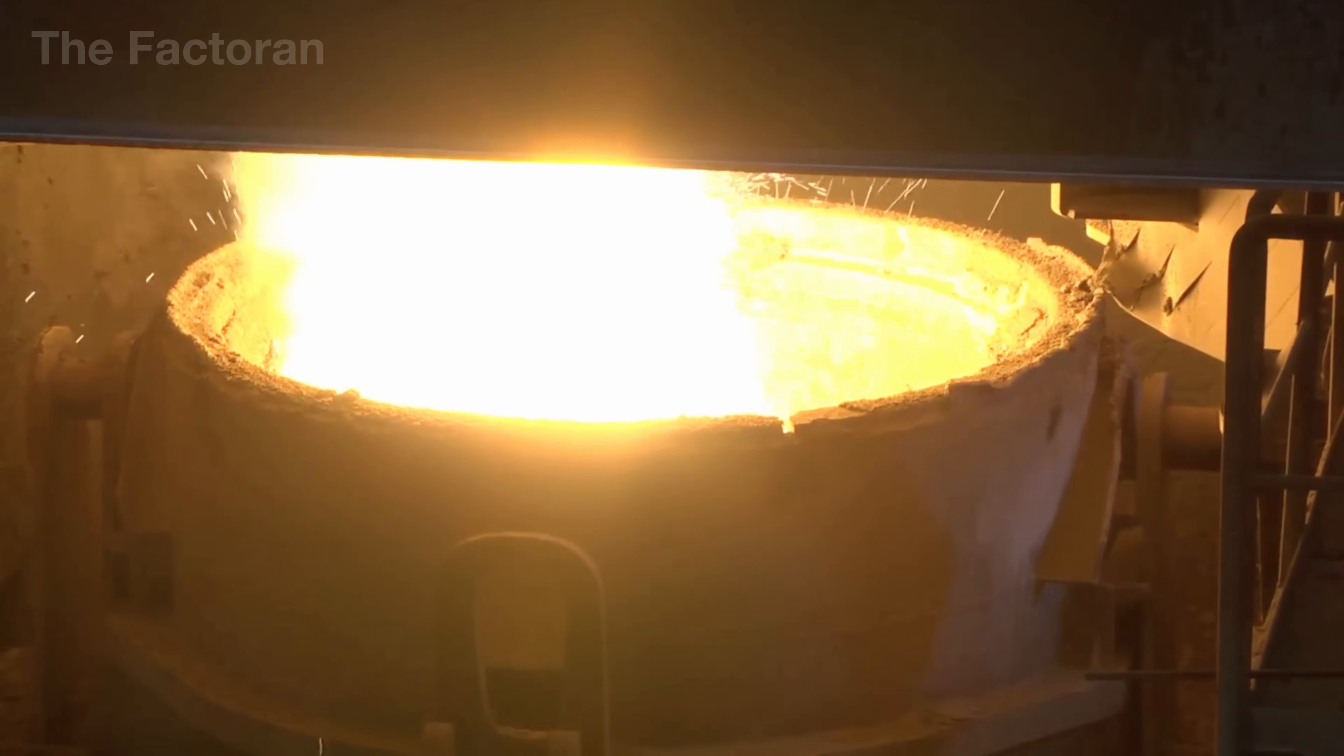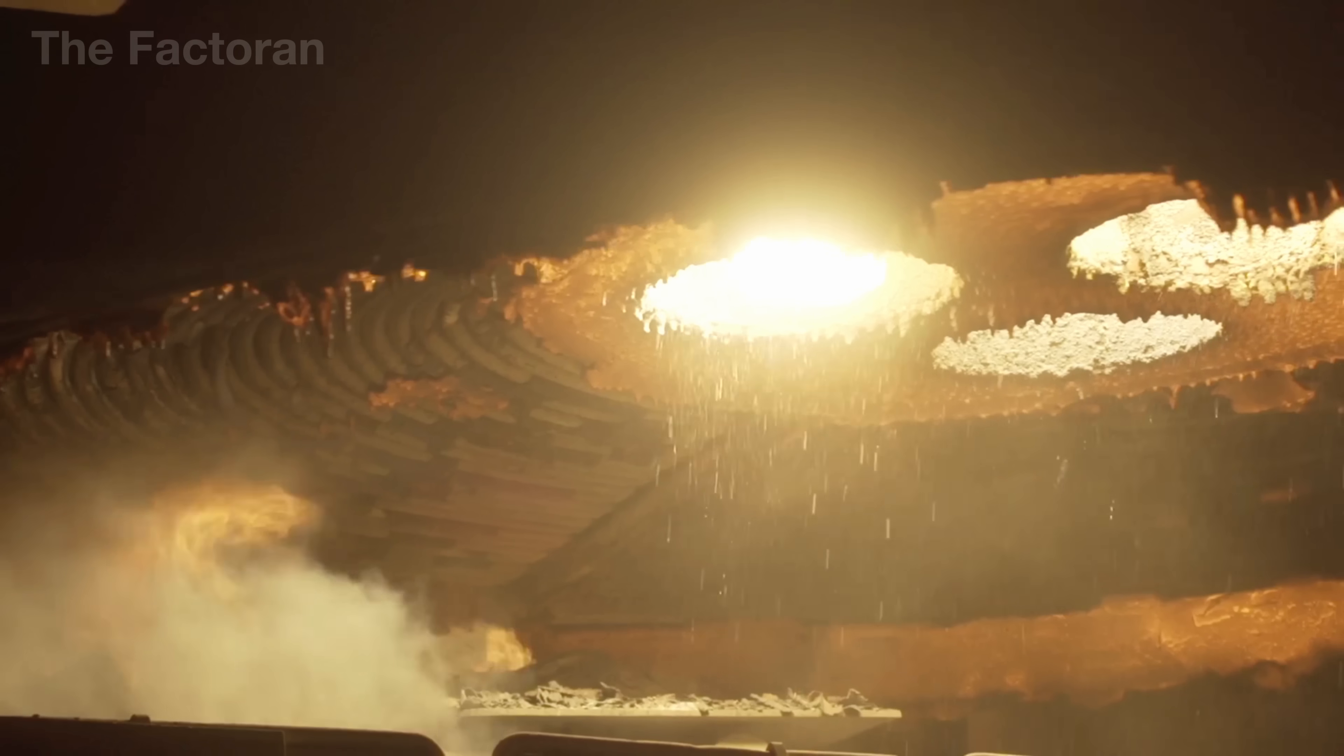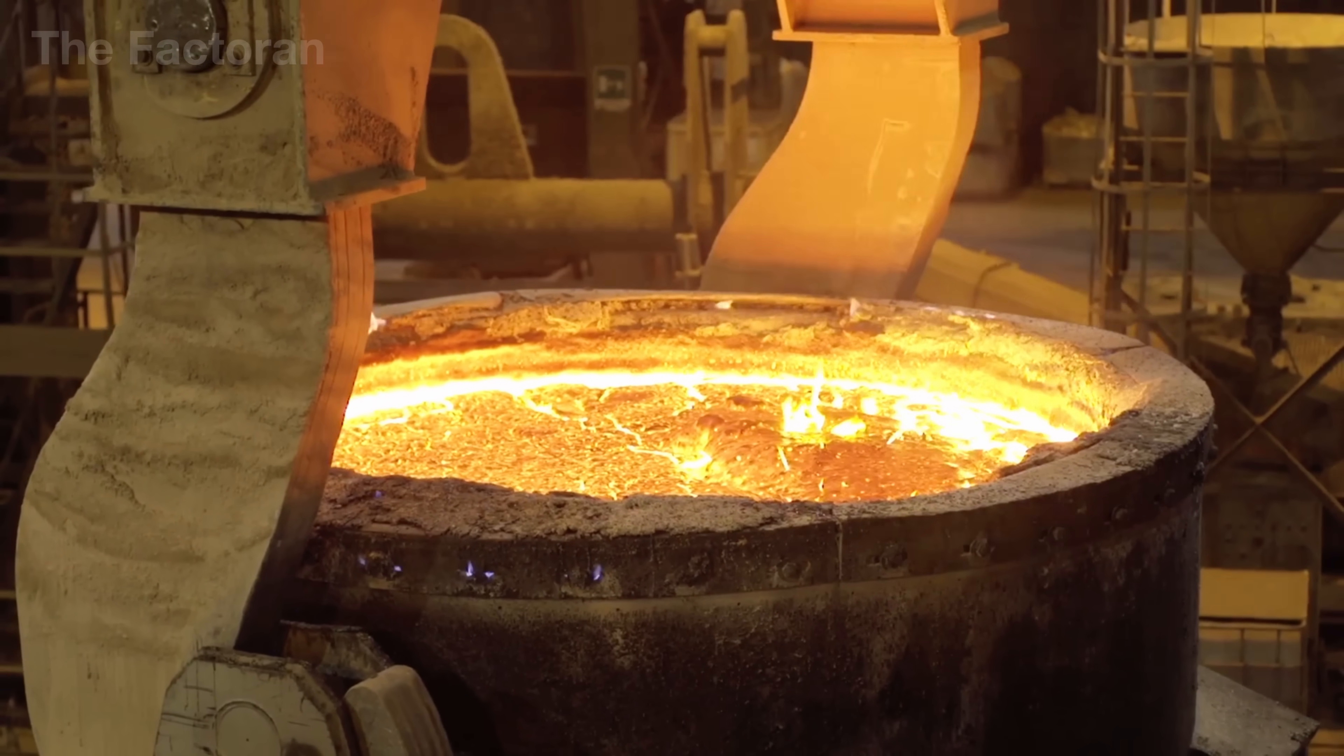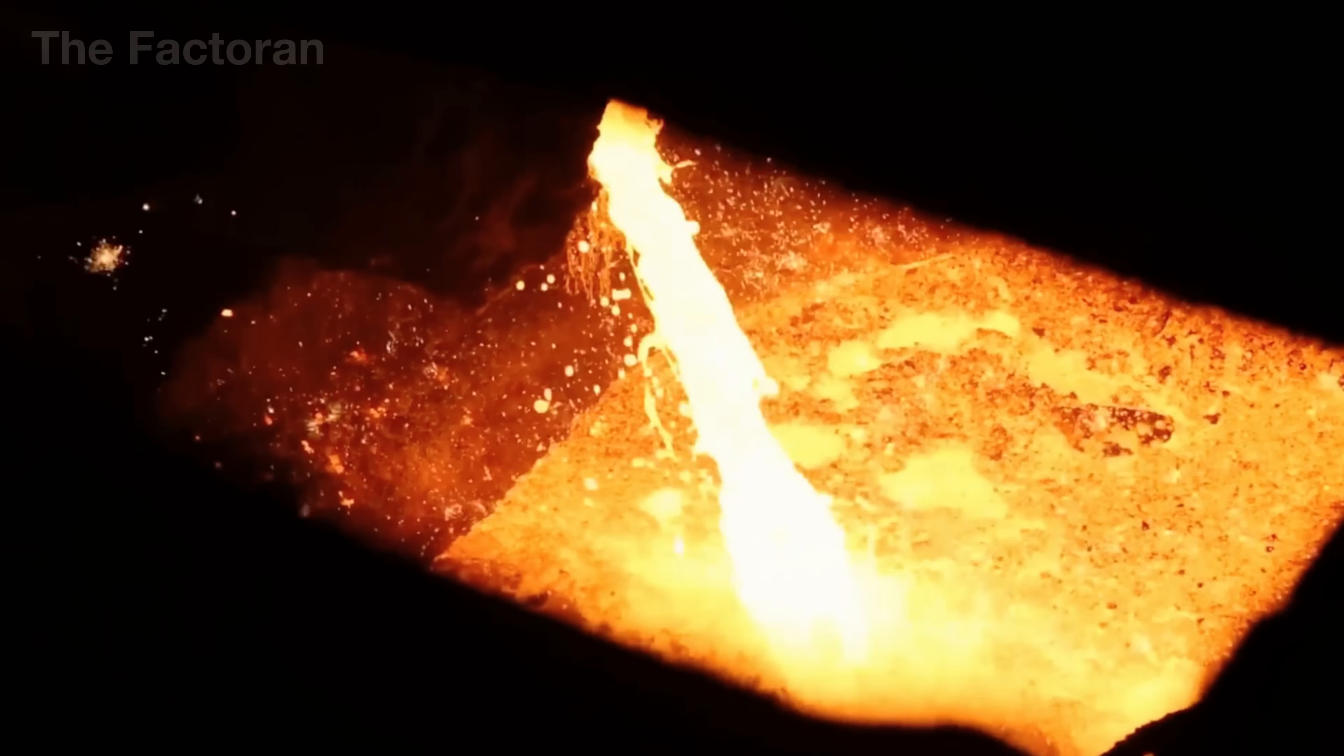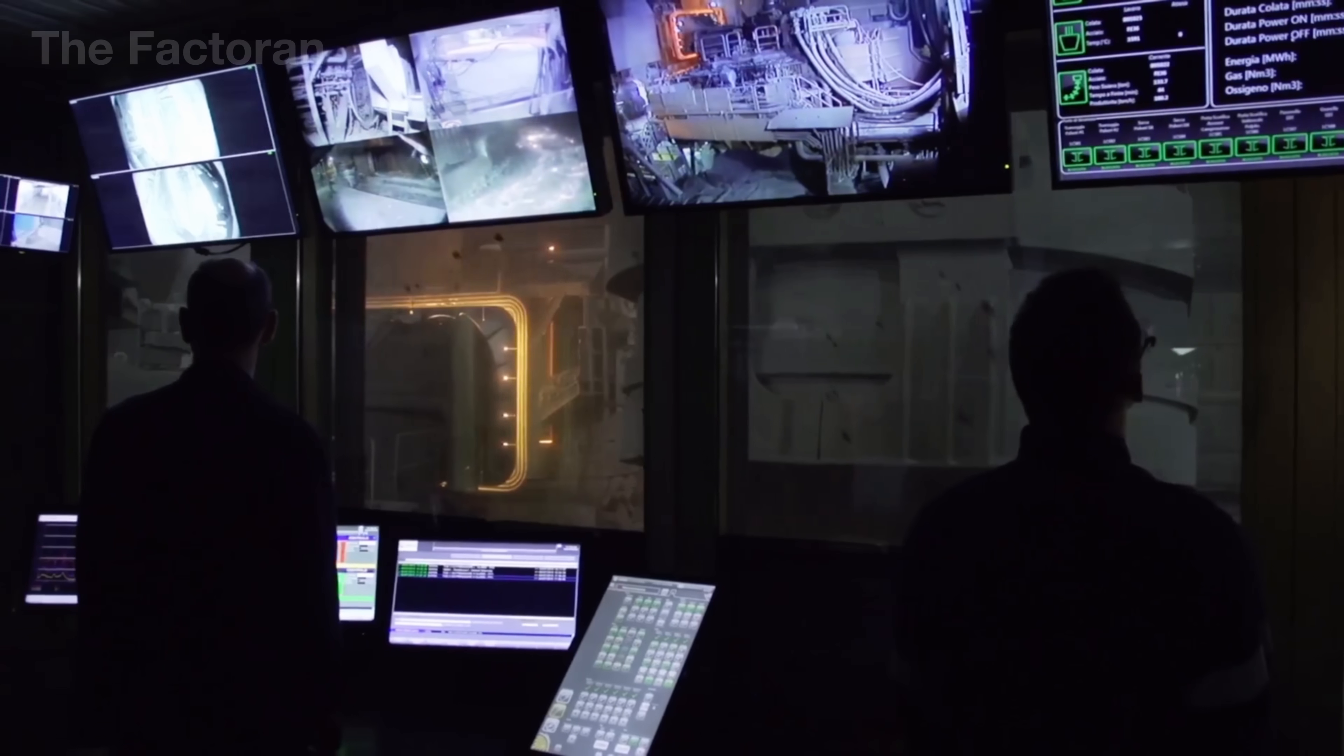To give the steel its desired mechanical properties, engineers carefully add manganese to increase strength, chromium or nickel for corrosion resistance, and silicon to enhance ductility. At the same time, quicklime and floorspar are introduced, forming a layer of slag that rises to the surface. Acting like a natural filter, this slag absorbs impurities and refines the molten metal, leaving the steel cleaner and stronger.